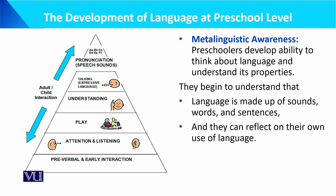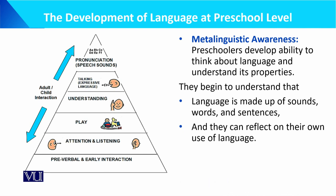The triangle diagram shown here represents the actual stages of language development. These include: pre-verbal and early interactions, then attention and listening, then play, then understanding adult-child interaction, then simple to complex movement — from bottom to top — talking, expressive language, pronunciation and speech sounds. These different sounds combine to form words, and the child gradually learns to produce them at this stage.